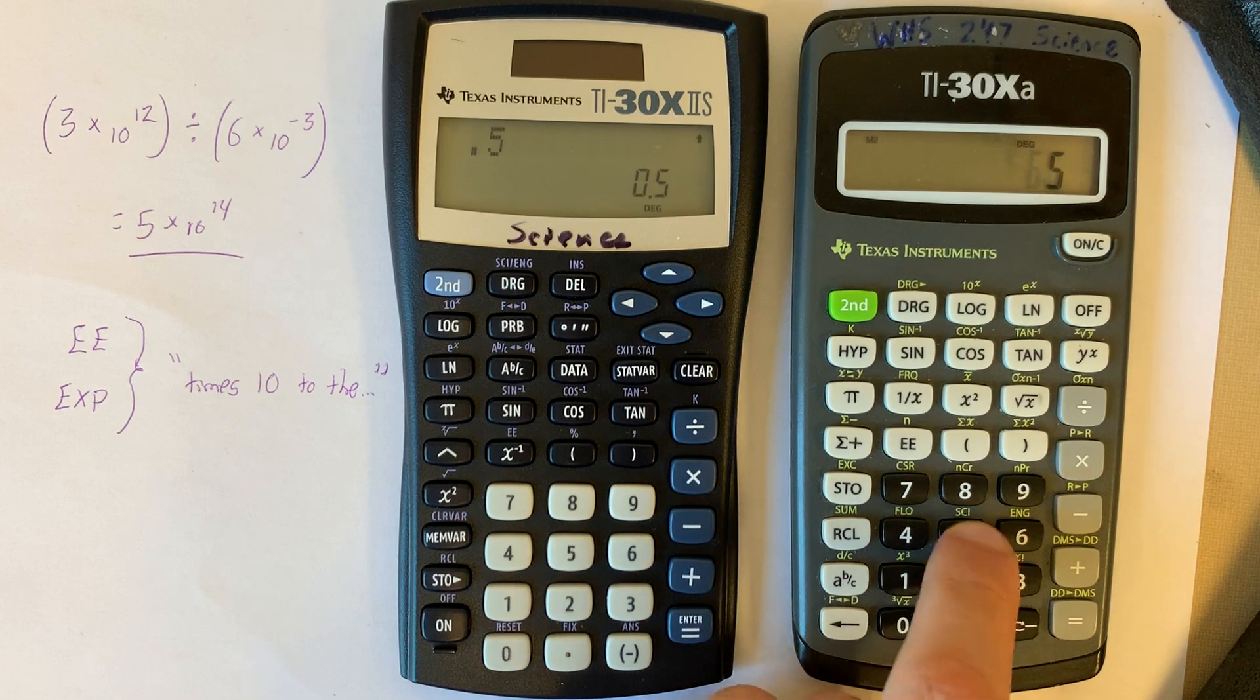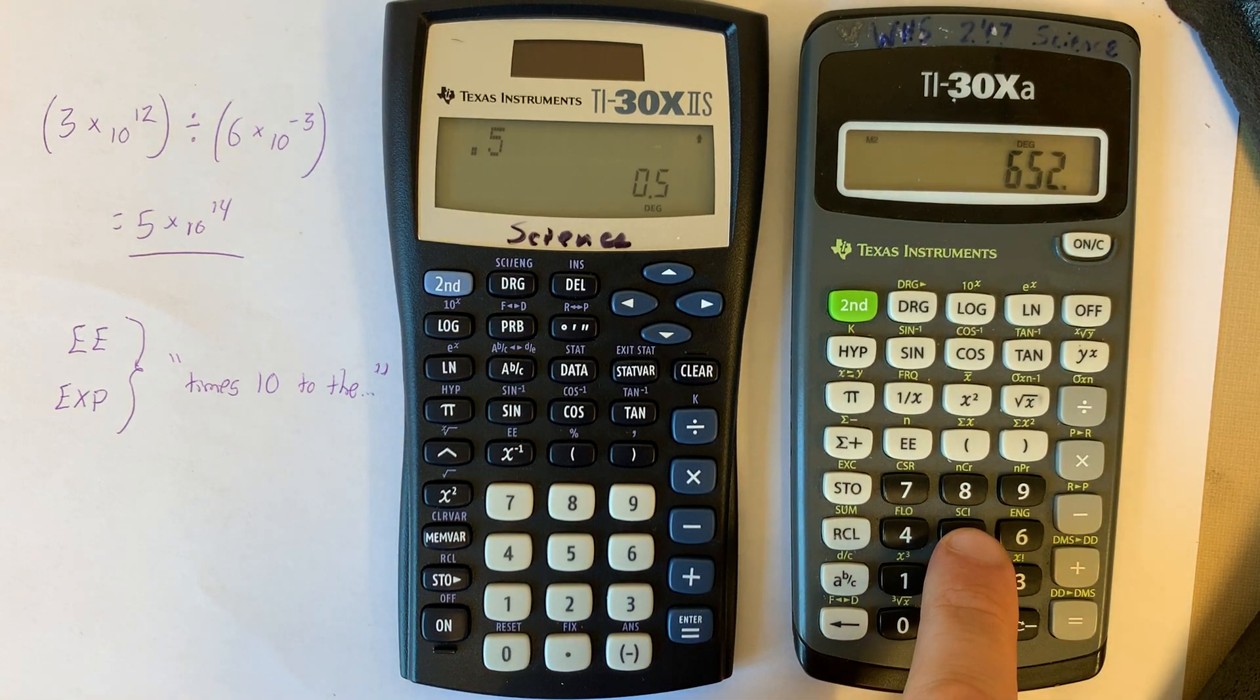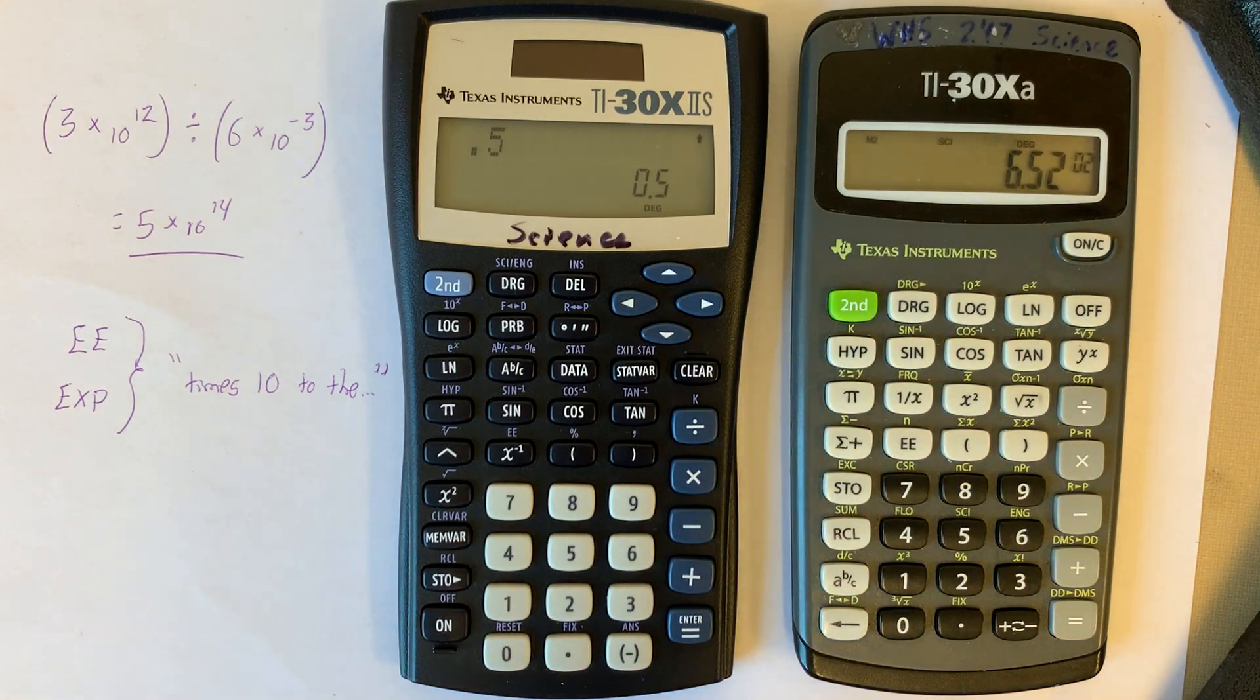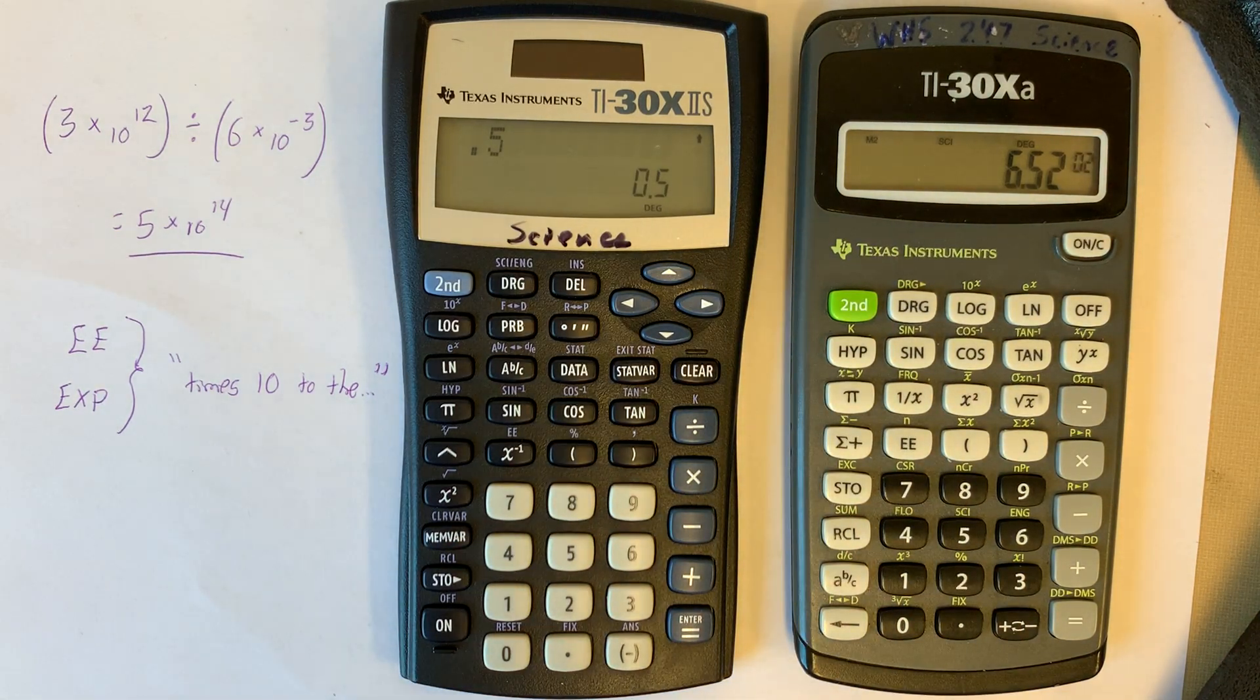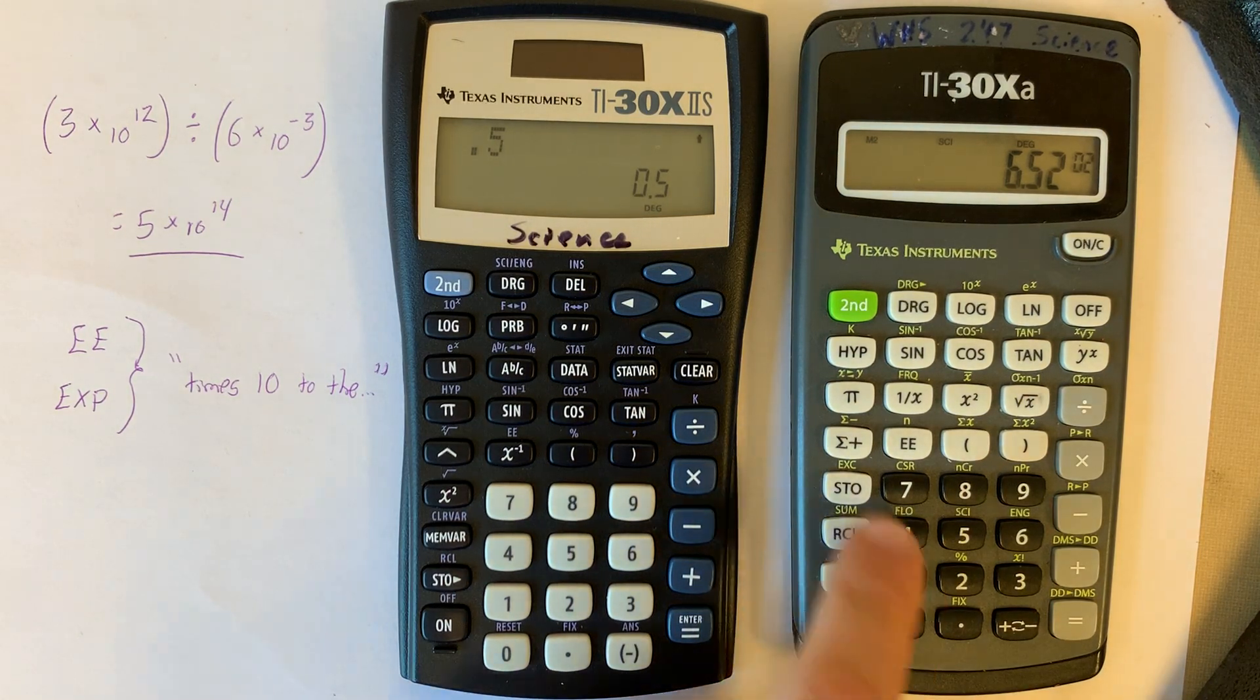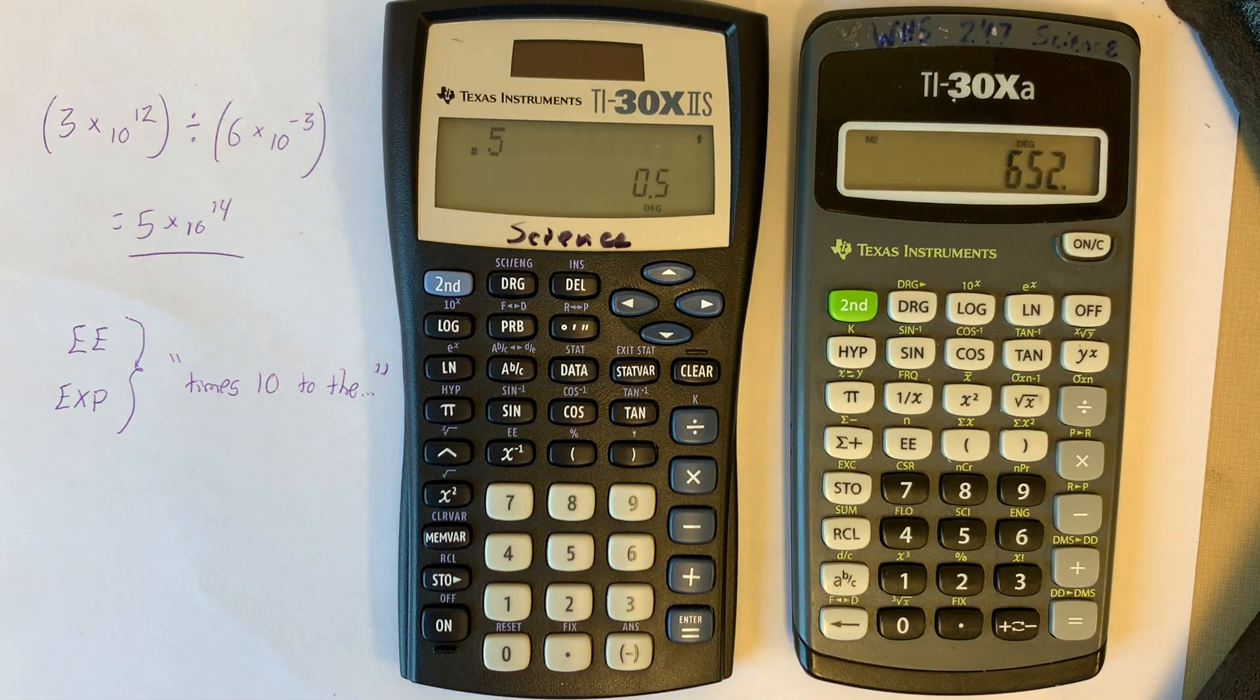I can do the same thing over here, 652 equals, it says SCI here above the number 5, so I'm gonna press 2nd SCI, and now it's scientific notation, 6.52 times 10 to the 2nd power. I can go back to float, 2nd float, and now it's back to standard notation, 652.